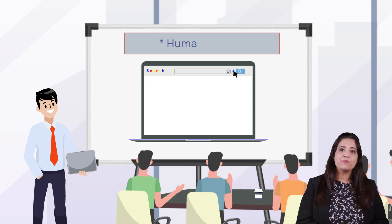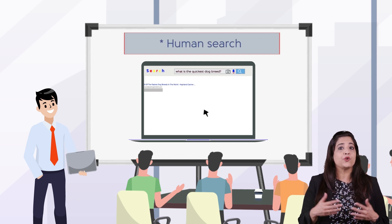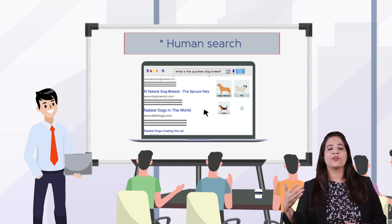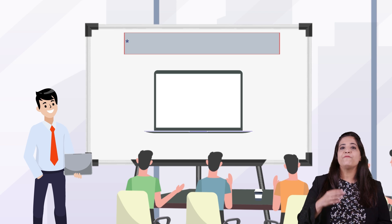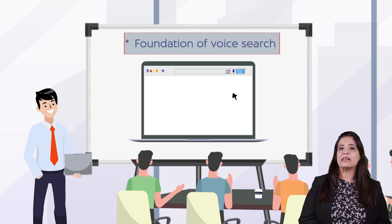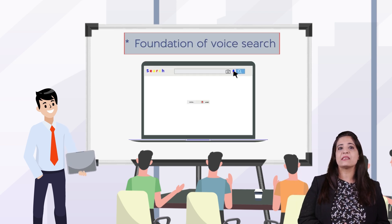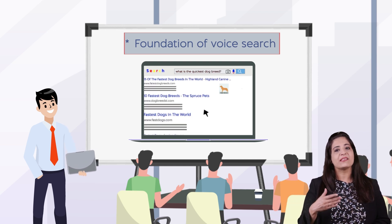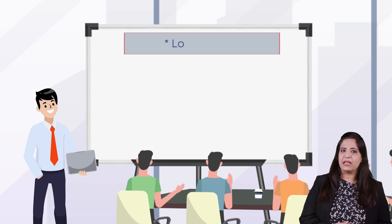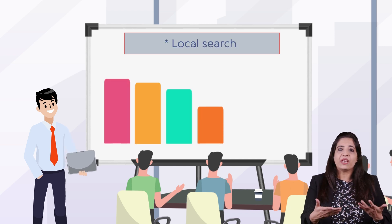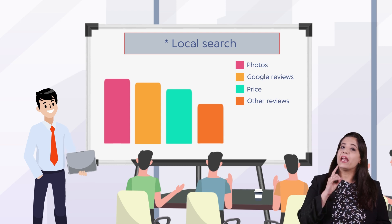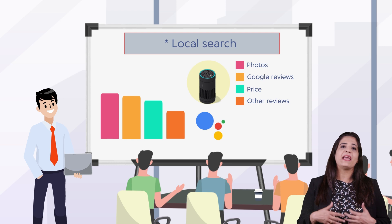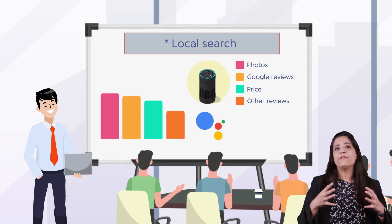In human search, by providing information on things that users don't know and helping them with custom search, it has become more human. In the foundation of voice search, there is increased search as a result of the aim and context behind Hummingbird, resulting in voice search. Additionally, local search results grew more exact, and voice assistants such as Alexa and Google Home have aided local businesses in gaining foot traffic.